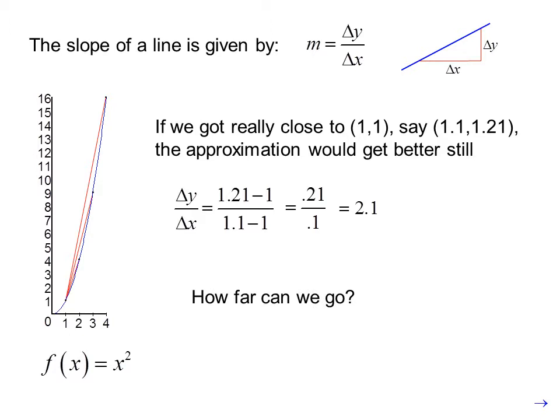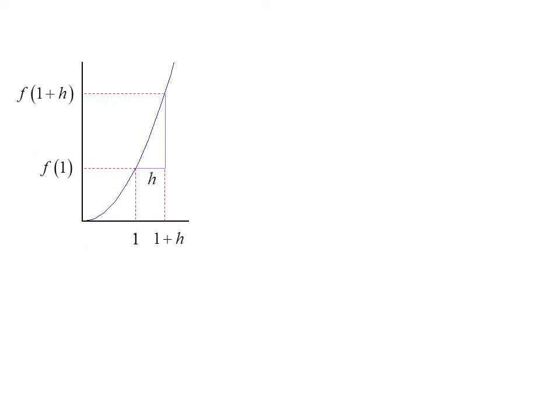How far can we go? If we zoom in a little in our imagination, we see that we have the point (1,1) and we can move over a distance h and find a new y value, f(1 plus h). The slope is delta y over delta x, which is f(1 plus h) minus f(1) over h. That's the change in y over the change in x.